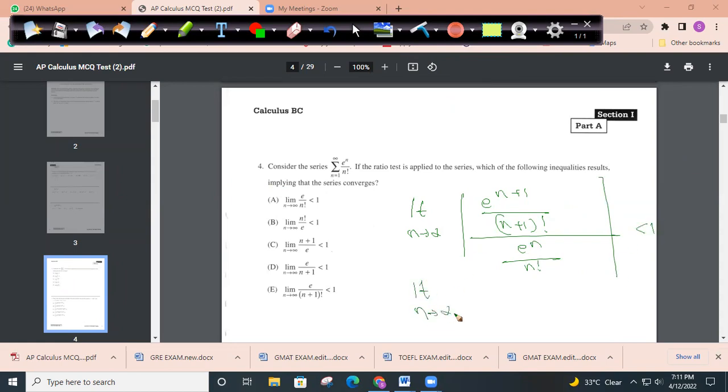Limit n tends to infinity. This can be written as e^(n+1) by (n+1) factorial into n factorial. No need to do all this if you are very good, but I'm doing step by step. So e^(n+1) by e^n is e. N factorial by (n+1) factorial is n+1. So e^n by n+1, limit n tends to infinity modulus, is less than 1.